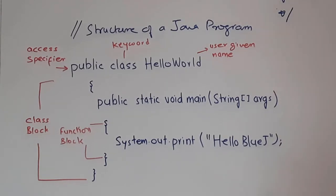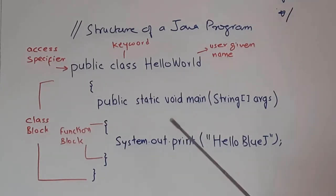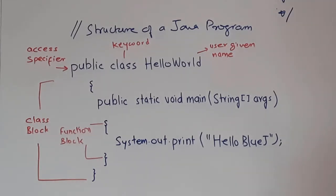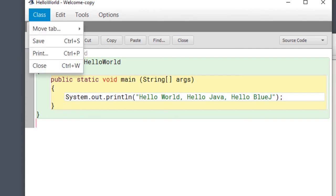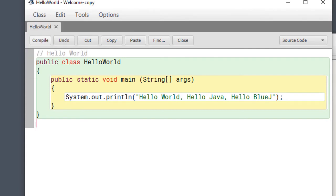This is a simple program. You can type it inside the opened text editor of BlueJ. I will paste a copy of this program in the comments box under this video — you can simply copy it and paste it. After pasting this program, you need to first save it. After saving, you need to compile it. There is a button called Compile — press on it.